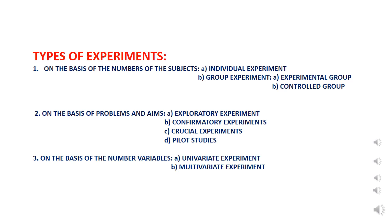Now let's talk about the types of experiments. How many experiments are in this video? In an experimental lab, in a psychological lab, the experiments are in three types of experiments. On the basis of the numbers of the subjects. On the basis of the problems and aims. On the basis of the number variables.